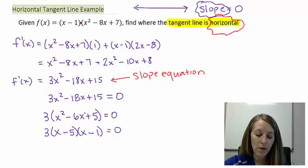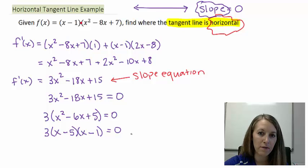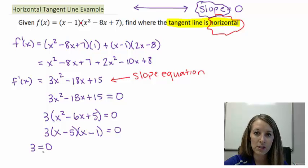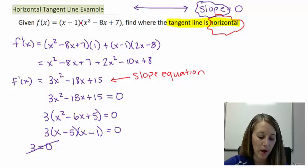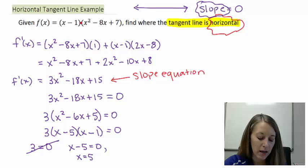So what I need to do now is set all three of these factors equal to 0. The first one, 3 equals 0, that just doesn't make any sense, so we throw that away. The next one, x minus 5 equals 0, gives me the solution of x equals 5. And last, x minus 1 equals 0, that gives me the solution of x equals 1.